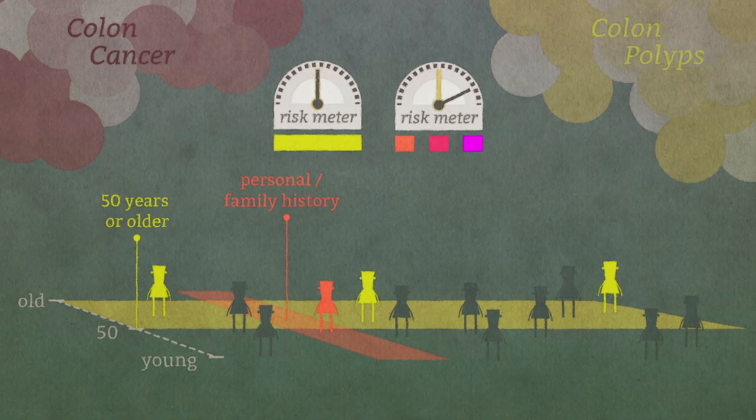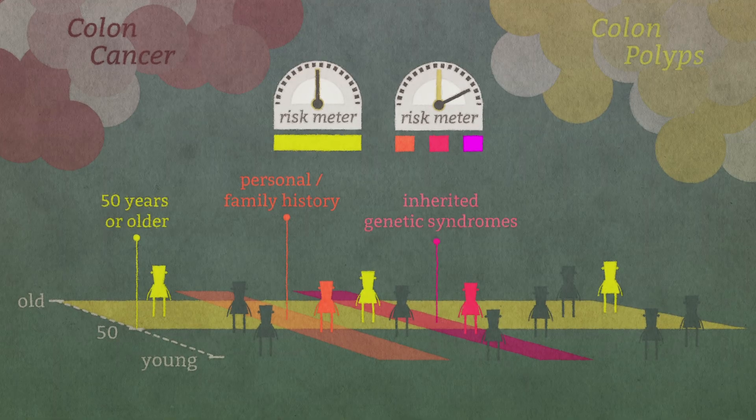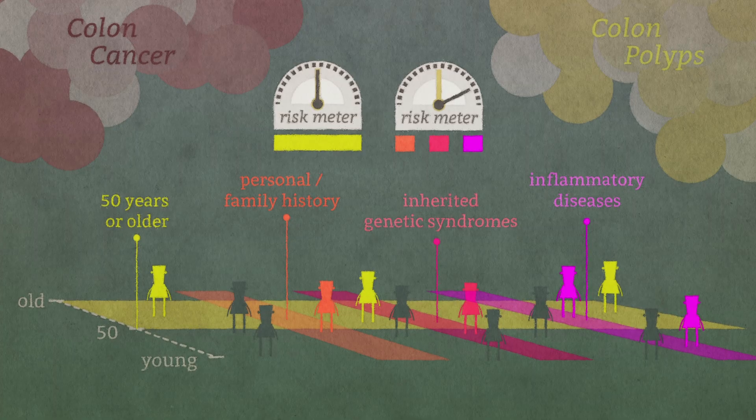There's also a higher risk group that includes people with personal or family histories of colon polyps or cancer, and those who suffer from inherited genetic syndromes or inflammatory diseases, like Crohn's disease and ulcerative colitis.